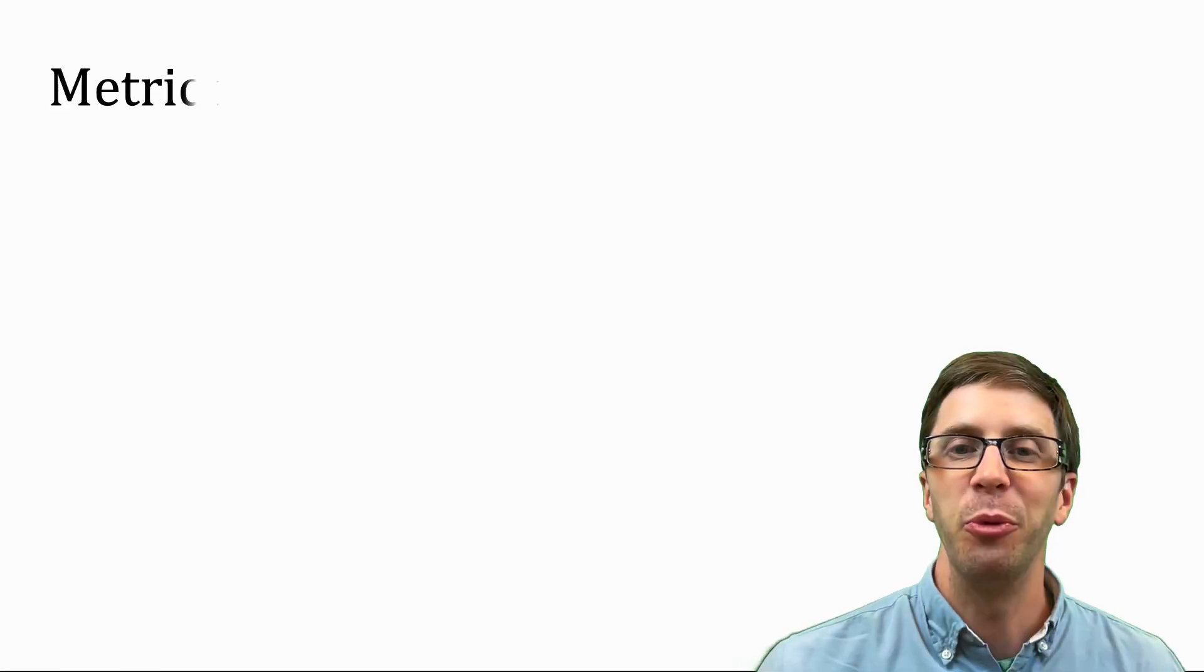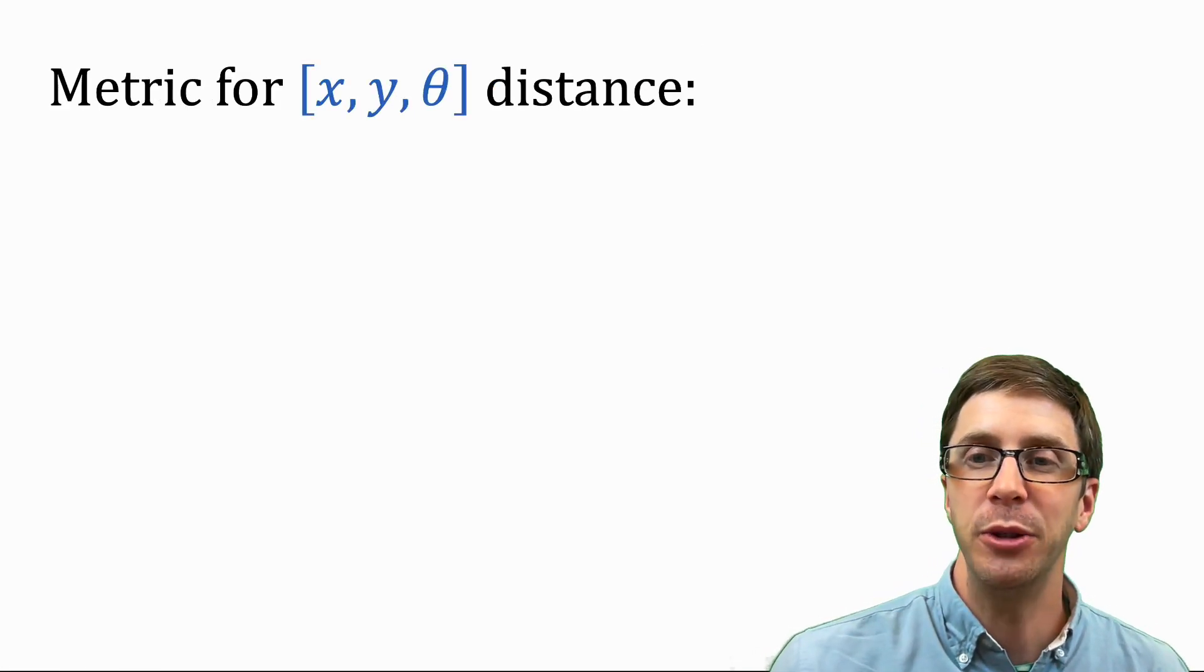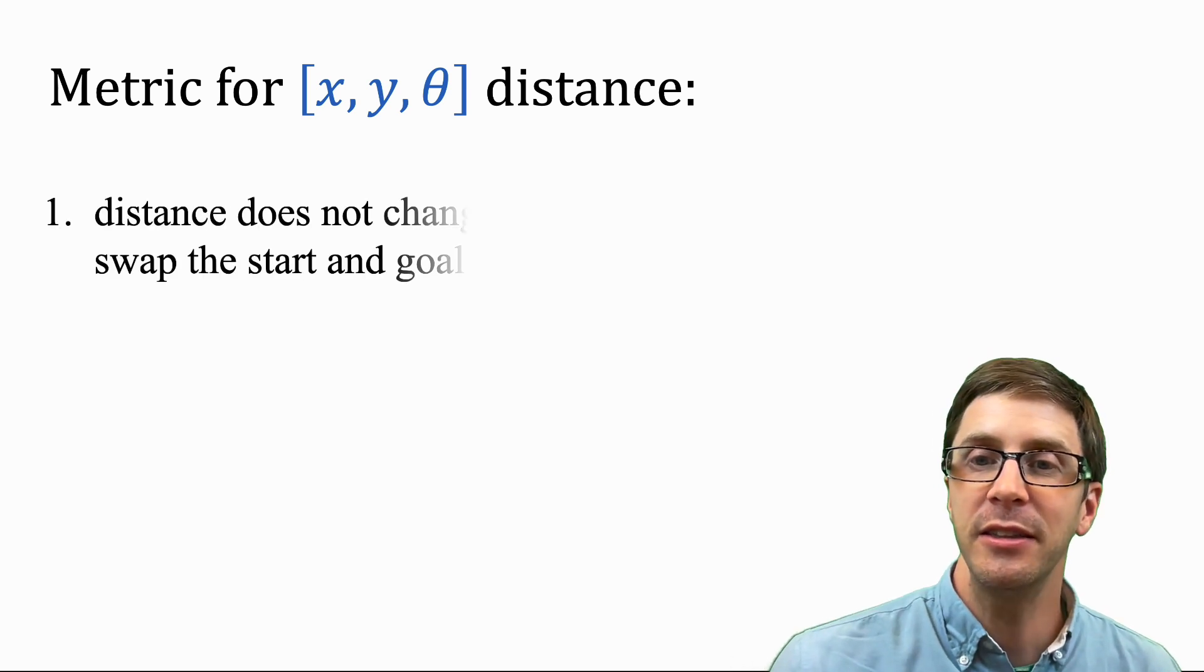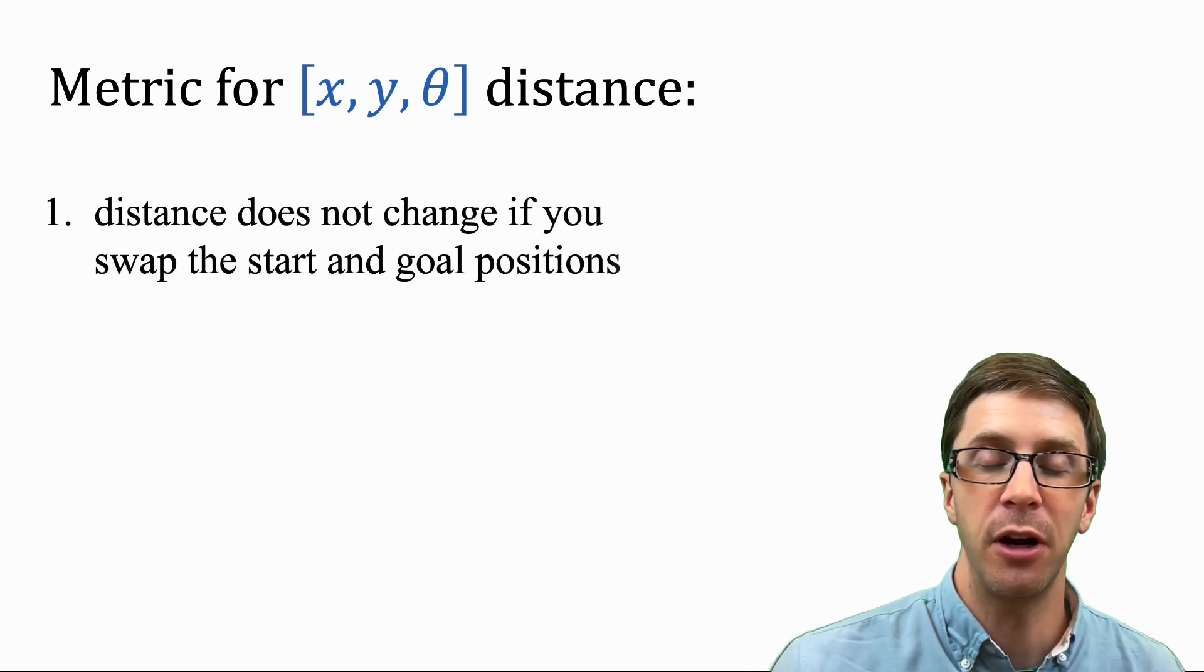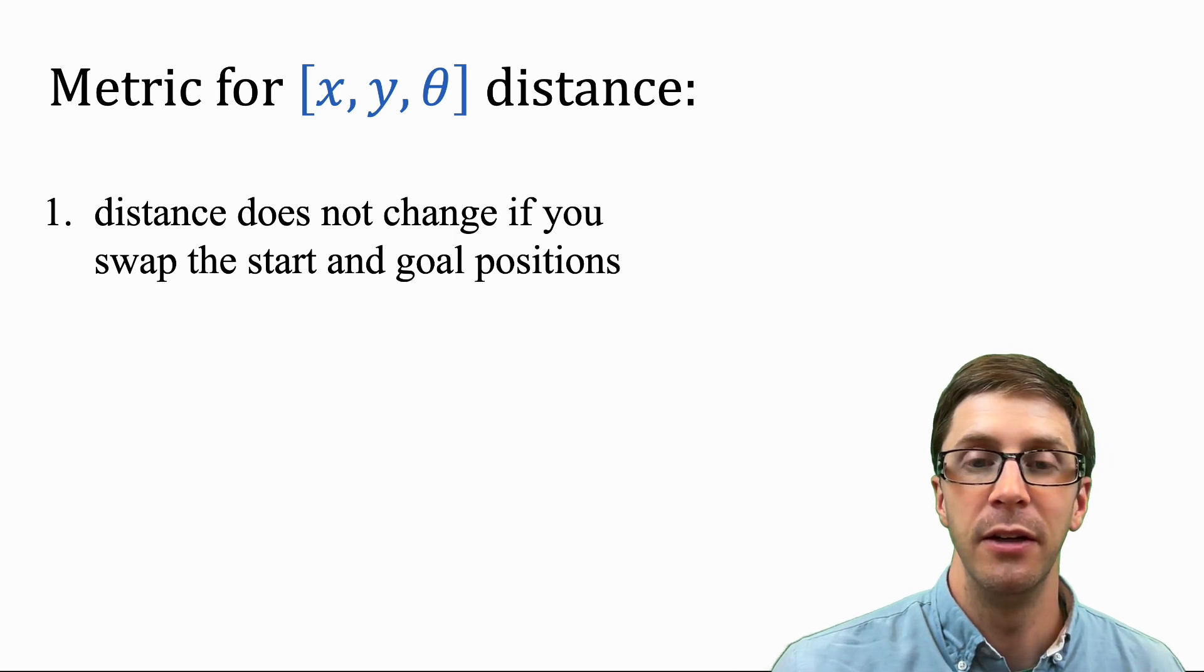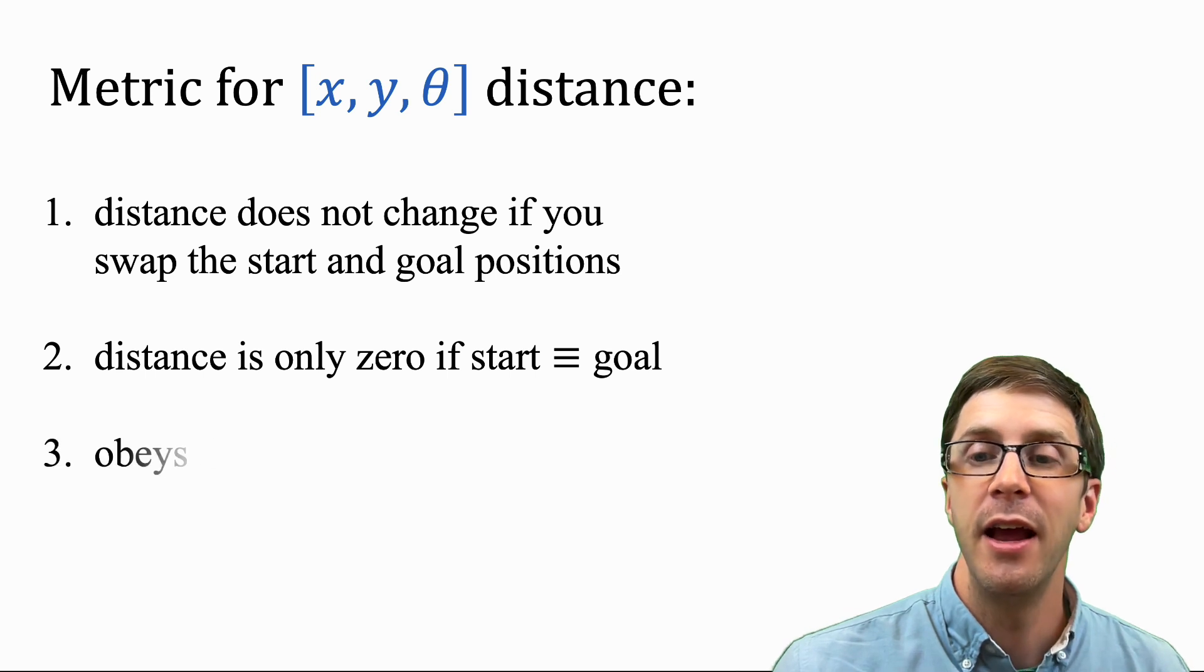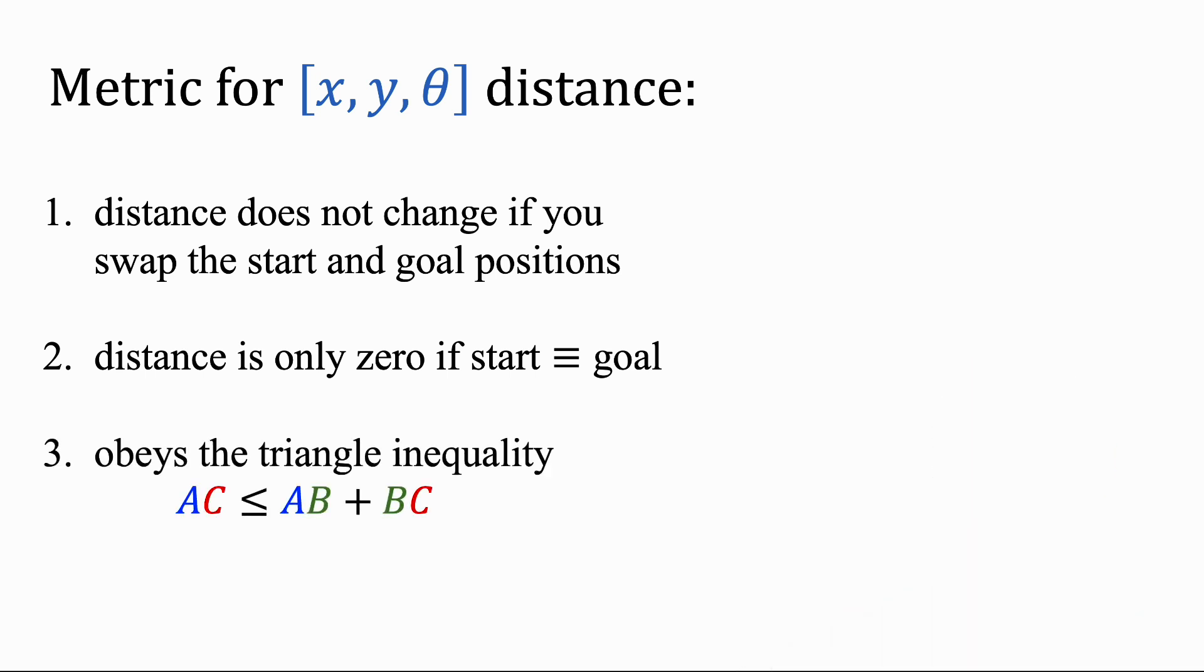Here is a cool fact. The Reeds-Shep path can be used as a metric for the xy theta configuration of a car because the distance does not change if you swap the start and the goal positions. The distance is only 0 if the start and goal are equivalent, and it obeys the triangle inequality.